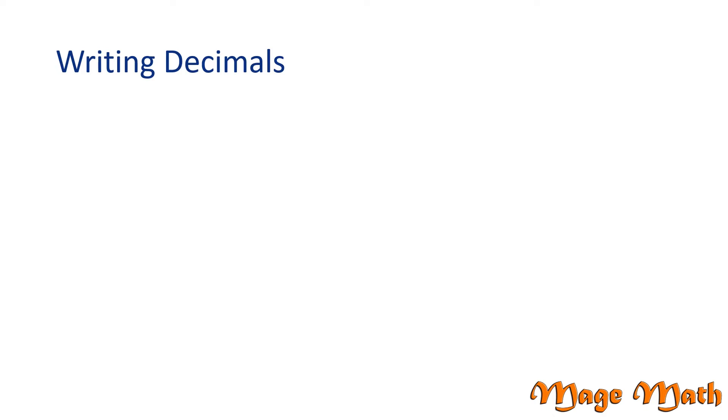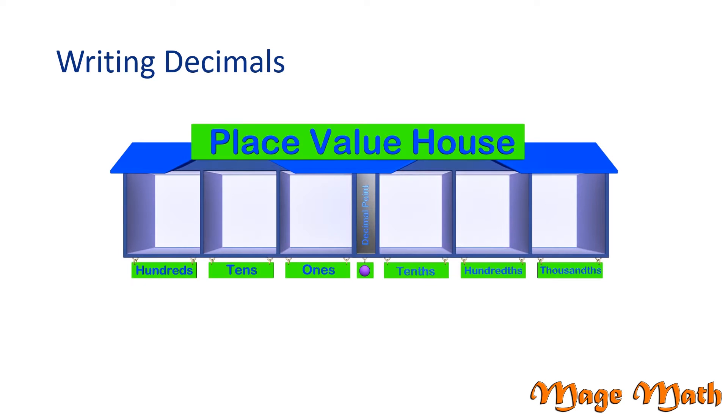Today we are going to practice writing decimals. Decimal numbers are very common and they require a strong understanding of place value. So let's review our place value house. Our decimal point separates whole numbers that are written on the left from decimal numbers that are written on the right. Only one digit can go in any box or place value at a given time.